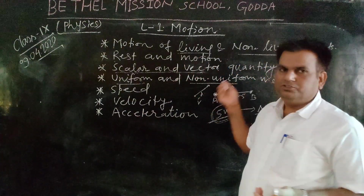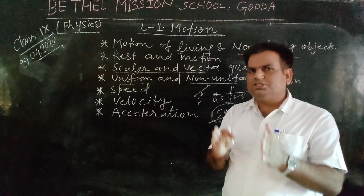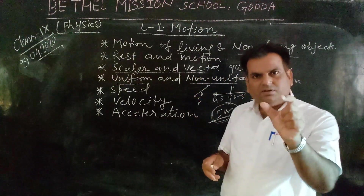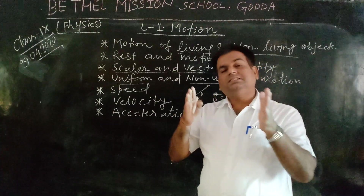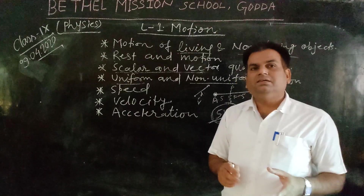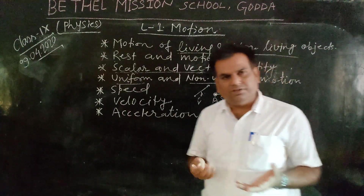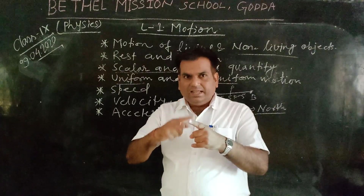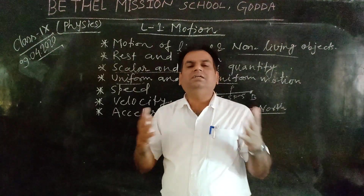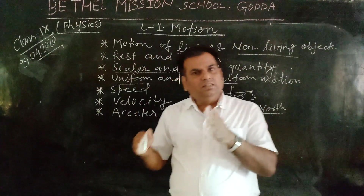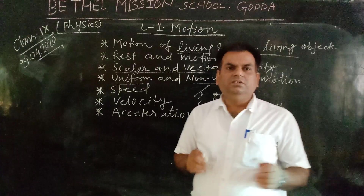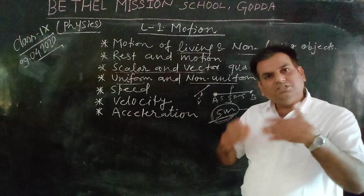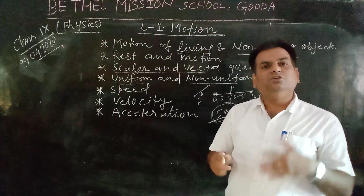Non-uniform motion: in this case the object does not cover equal distance in equal intervals of time. The interval of time is the same but the distance covered is unequal. For example, an object starts from a point — after one second it covers five metres, next second it covers ten metres, next second it covers seven metres. The distance is not the same, not equal.